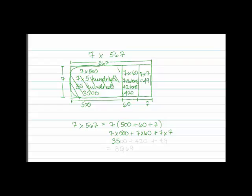And if I finish out my calculations again, I have 3500 plus 420 plus 49. And now if I add those all together, which I can use strategies for addition or standard algorithm, I come up with 3969.